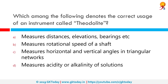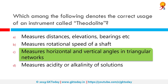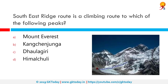Which among the following denotes the correct usage of an instrument called a theodolite? That would be option C — it measures horizontal and vertical angles and triangular networks. A theodolite is a precision optical instrument for measuring angles between designated visible points in the horizontal and vertical planes.